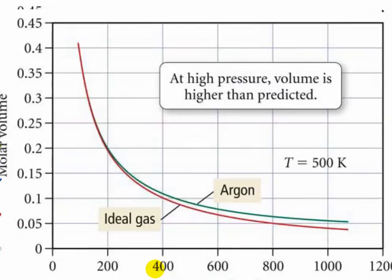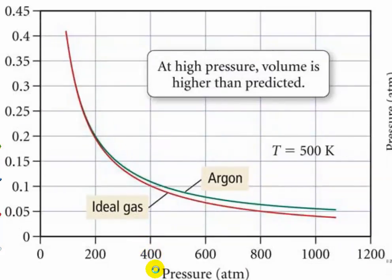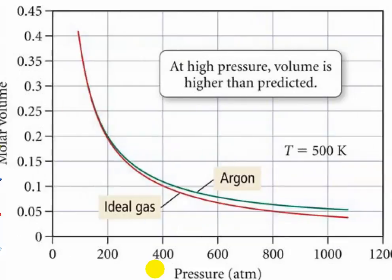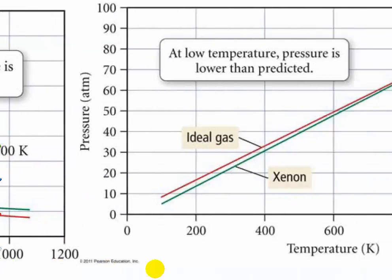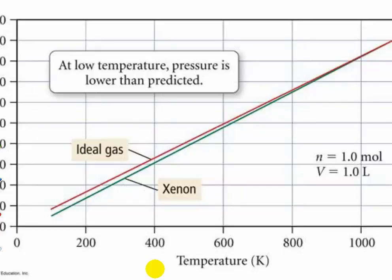The graphs show this difference. At high pressure, volume is higher than predicted — because of the space the molecules take up — so we subtract a little from volume. At low temperature, pressure is lower than predicted because of intermolecular forces: molecules are attracted to each other a little bit and are not colliding as much as predicted. So the van der Waals equation corrects pressure by adding a term and corrects volume by subtracting a term.